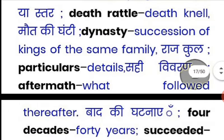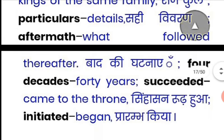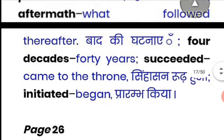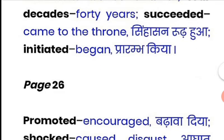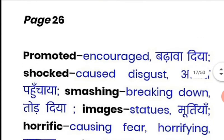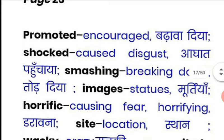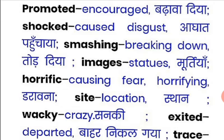'Dynasty' is the succession of kings — where the next ruler comes from the same family. 'Particulars' means detail. 'Aftermath' means after some time — what happens after an event. 'Four decades' means forty years. 'Succeeded' means to come to the throne. 'Initiated' means to begin something. 'Promoted' means to encourage. 'Shocking' means to cause disgust or great surprise. 'Smashing' means to break images or statues.